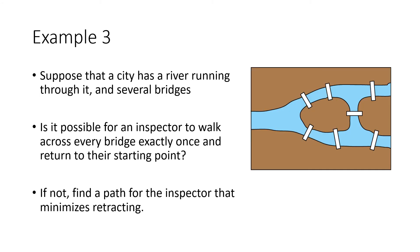Here's one more example — a city with a river running through it, which we've worked on before. An inspector wants to walk across every bridge exactly once and return to their starting point. We previously found this graph did not have an Euler circuit and stopped there. Now we want to find a tour that minimizes retracing.